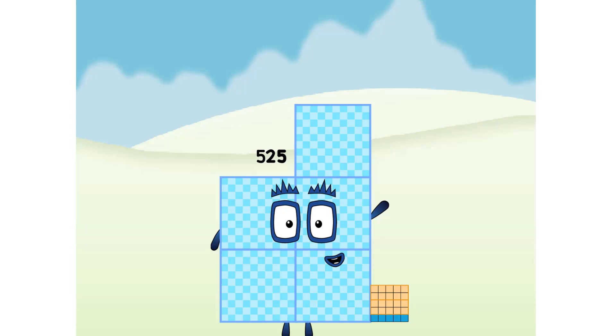35 is three tens and five ones. 105 is 100, zero tens, and five ones. And 315 is three hundreds, one tens, and five ones.